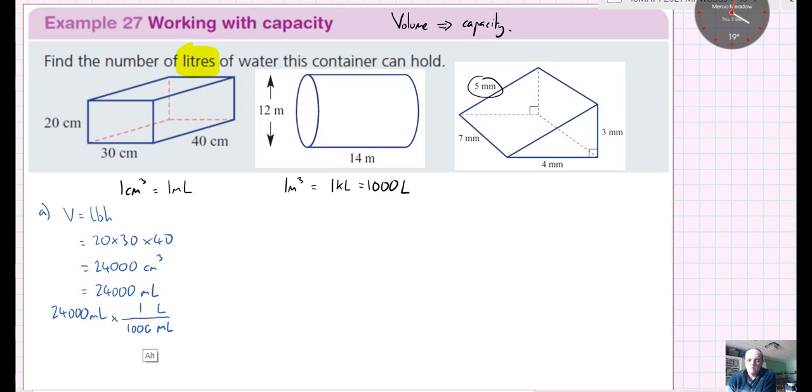One liter is 1,000 milliliters. So really what I'm doing here is 24,000 divided by 1,000. That's just going to give me 24 liters.